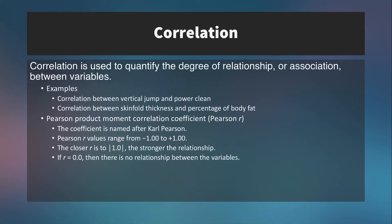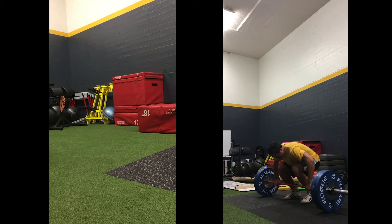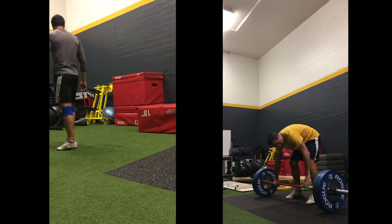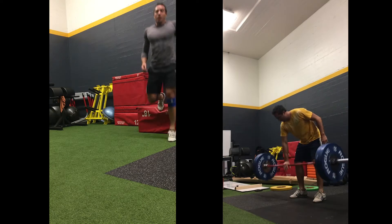A correlation is used to quantify the degree of relationship or association between variables. For example, if you wanted to know how a vertical jump relates to performance in the power clean, you could use a correlation to tell you that relationship. People who are able to generate explosive lower body power to jump high can do the same thing to move a loaded bar into the power clean position. So these variables are related — there's a positive relationship between them.